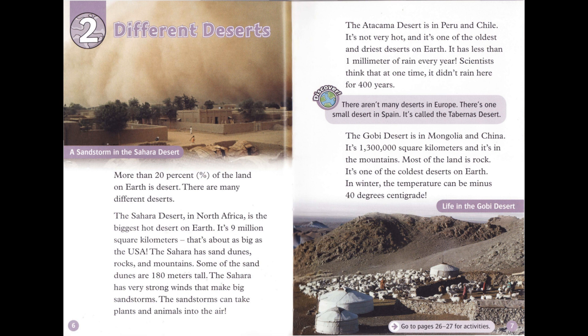There aren't many deserts in Europe. There's one small desert in Spain called the Tabernas Desert. The Gobi Desert is in Mongolia and China. It's 1,300,000 square kilometers and is in the mountains. Most of the land is rock. It's one of the coldest deserts on Earth — in winter, the temperature can be minus 40 degrees centigrade.